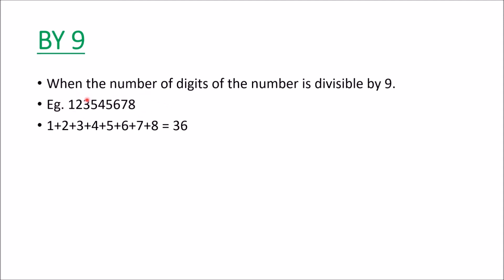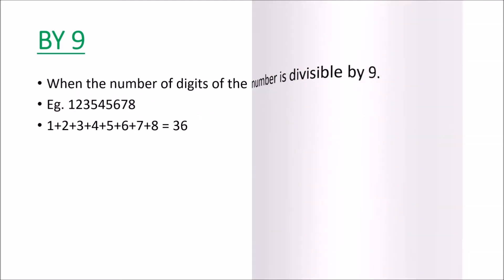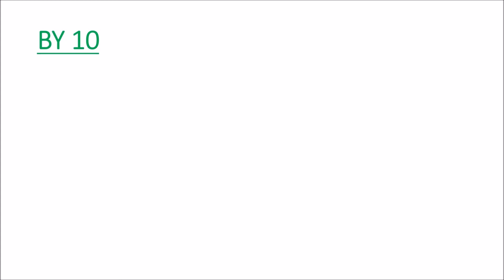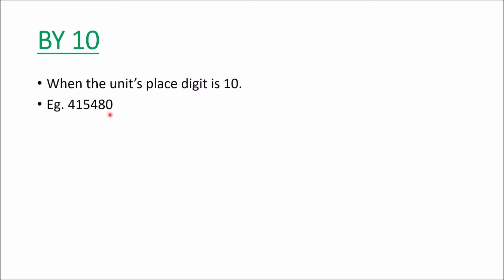Any number is divisible by 10 when the units digit is 0 — this is the simplest of all. For example, this number has 0 at the units place, so it is divisible by 10.